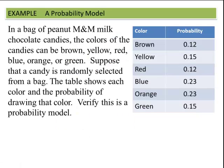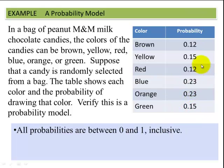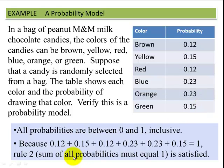Let's look at an M&M example. In a bag of peanut M&M milk chocolate candies, the colors are brown, yellow, red, blue, orange, and green. Suppose a candy is randomly selected — the table shows each color and the probability of drawing that color. To verify this is a probability model: first, each probability is between zero and one. Second, the sum 0.12 + 0.15 + 0.12 + 0.23 + 0.23 + 0.15 equals one. So this is a valid probability model.